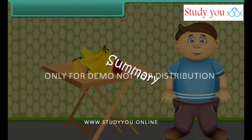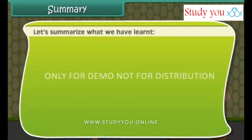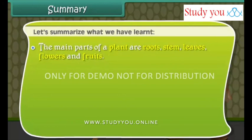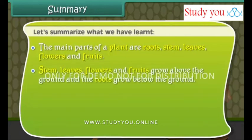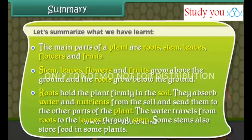Now let's summarize what we have learnt. The main parts of a plant are roots, stem, leaves, flowers, and fruits. Stem, leaves, flowers, and fruits grow above the ground, while roots grow below the ground. Roots hold the plant firmly in the soil, absorb water and nutrients from the soil, and send them to other parts of the plant. Water travels from roots to the leaves through the stem.